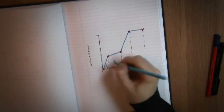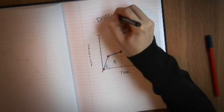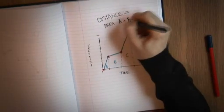So if the velocity is changing at a constant rate, you can work out the area under the graph, which will be a triangle or a trapezium, and you can work out the area and hence how far you've traveled.